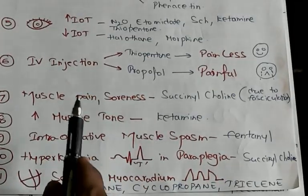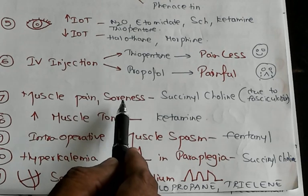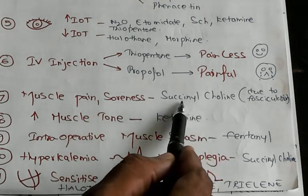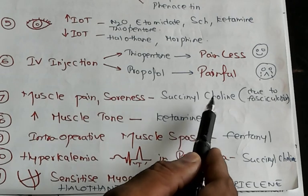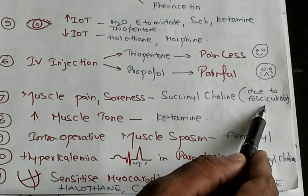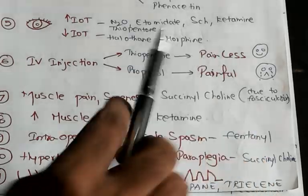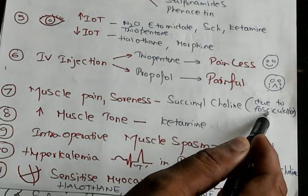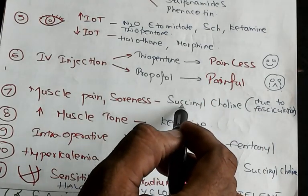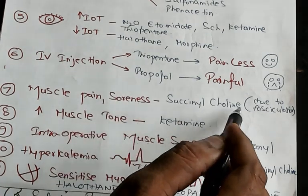Muscle pain and soreness: what is the feature of succinylcholine? When you give succinylcholine, it will typically lead to fasciculations — all muscles will go into fasciculation. That fasciculation will lead to development of postoperative muscle pain and soreness with succinylcholine.